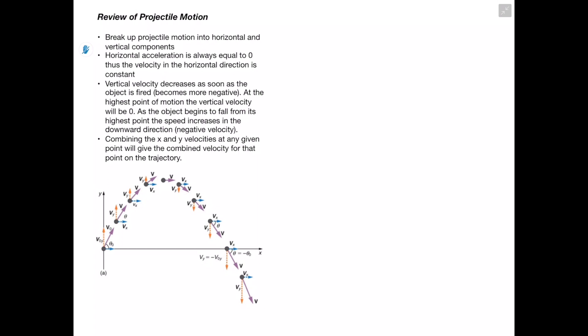Wrapping up projectile motion: we always break problems into horizontal and vertical components. The horizontal acceleration is always zero, so horizontal velocity is constant. The vertical velocity decreases as the object moves upward, reaches zero at the peak, then becomes negative as it moves downward. Therefore vertical velocity is always decreasing during projectile motion, while speed decreases going up, reaches zero at the top, and increases again on the way down.